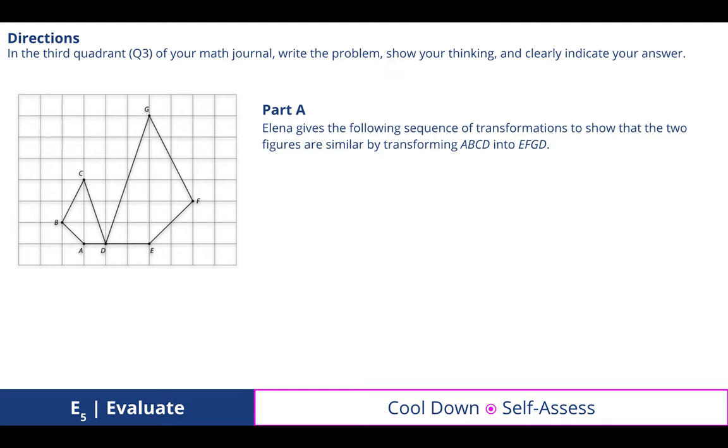For your cool down, your closing, in the third quadrant of your math journal, let's write the problem, show your thinking, and clearly indicate your answer. In part A, Elena gives the following sequence of transformations to show that the two figures are similar by transforming ABCD into EFGD. And the reason why D, again, is because we're sharing this point between both figures. So we discovered that this would be a reflection and a dilation with a scale factor of 2.